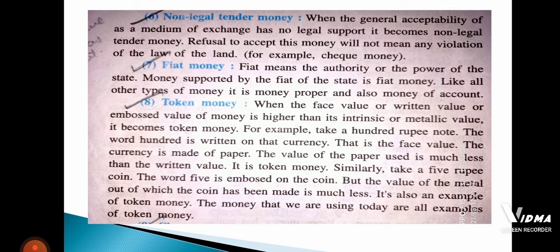Next is fiat money. 'Fiat' means order. So fiat money means money supported by the authority or power of the state. Similar to legal tender money — it is money that has been ordered by the state, meaning the government. That money which has got the approval or the order of the law is fiat money.